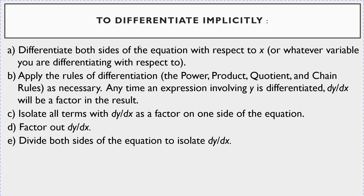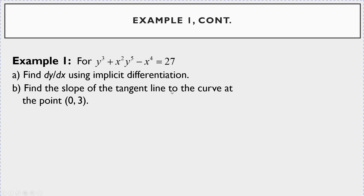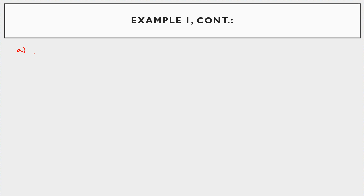What you're going to do is isolate all terms with dy/dx as a factor on one side of the equation, factor out dy/dx, and then divide both sides to isolate dy/dx. So for this expression — y cubed plus x squared y to the fifth minus x to the fourth equals 27 — let me rewrite it: y cubed plus x squared y to the fifth minus x to the fourth equals 27. Now I'm going to differentiate both sides with respect to x.